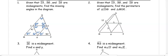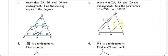In number two, given that IS, SG, and IG are mid-segments, find the perimeter. If MD is 12, we want half of that length to get the mid-segment SG, which is 6.